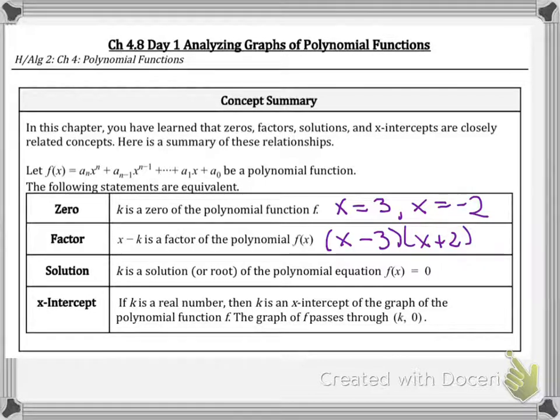Then the last one is the x-intercept. If k is a real number, then k is an x-intercept of the graph of the function. The graph of f passes through k, 0. So you actually write it as an ordered pair, 3 comma 0 and negative 2 comma 0.